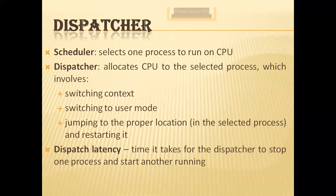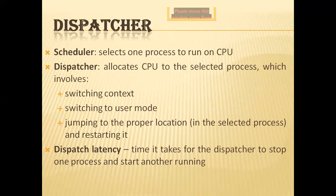The dispatcher is another component involved in CPU scheduling. It is a program responsible for assigning the CPU to the process selected by the short-term scheduler. Assigning the CPU to a ready process involves three major steps: context switching, switching to user mode from monitor mode, and restarting the execution of the process.